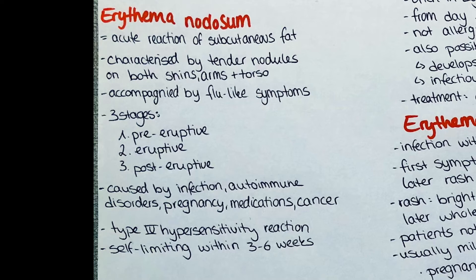The first stage is the pre-eruptive stage. Here patients experience fever, cough, general unwell-being and sometimes also pain in their joints. In the second stage, the eruptive stage, the characteristic nodules appear underneath the skin. They are usually 2.5 to 5 cm large and tender, and are usually found on the shins, arms and trunk.